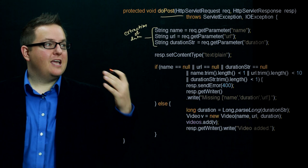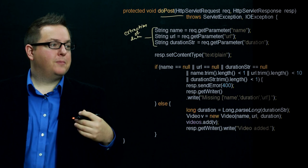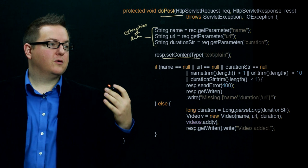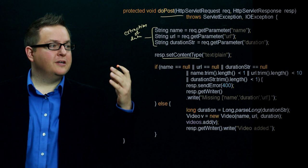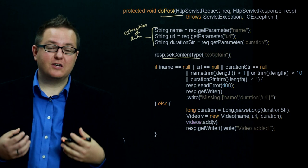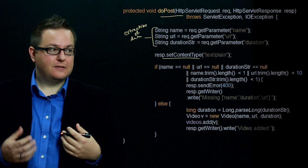Once we've extracted the data, the next thing the POST method does is set the content type of the response — just like in doGet — so the client knows we're sending plain text back. We don't want it misinterpreted. We're going to send a plain text response that tells the client what happened on the server, giving it a bit more information than just the HTTP response code.